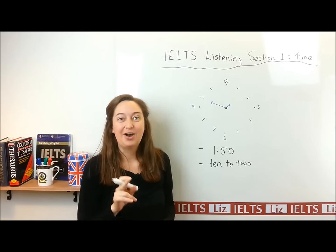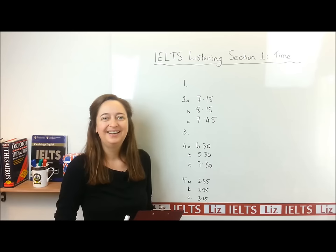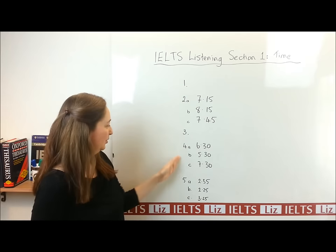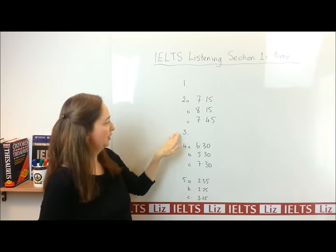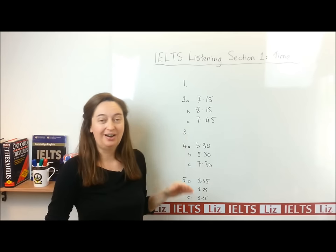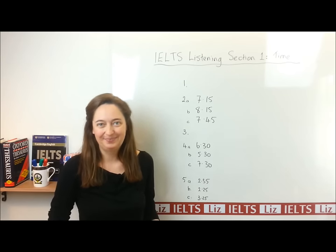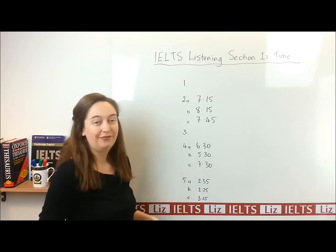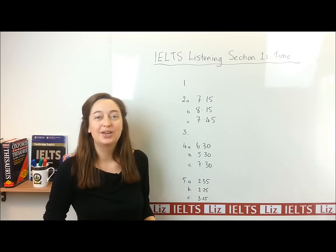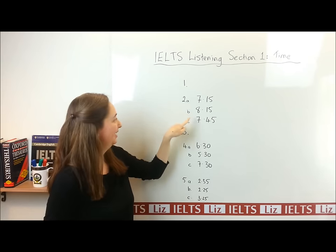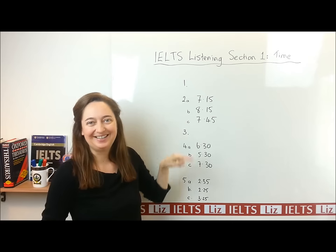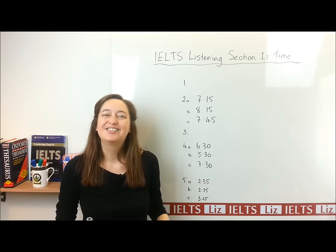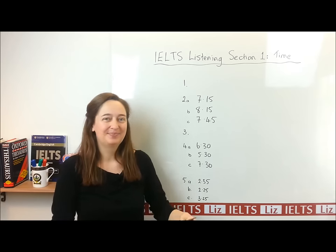Let's have a look at the test I'm going to give you now. For this test, you're going to have five questions, and you can see them written here. For Question 1 and Question 3, I want you to listen to the time I tell you and write it down. Remember to write with numbers, not words. And for Questions 2, 4, and 5, I want you to choose the right option — A, B, or C. I'm only going to say the time once, just like in the test. So listen carefully and let's start.